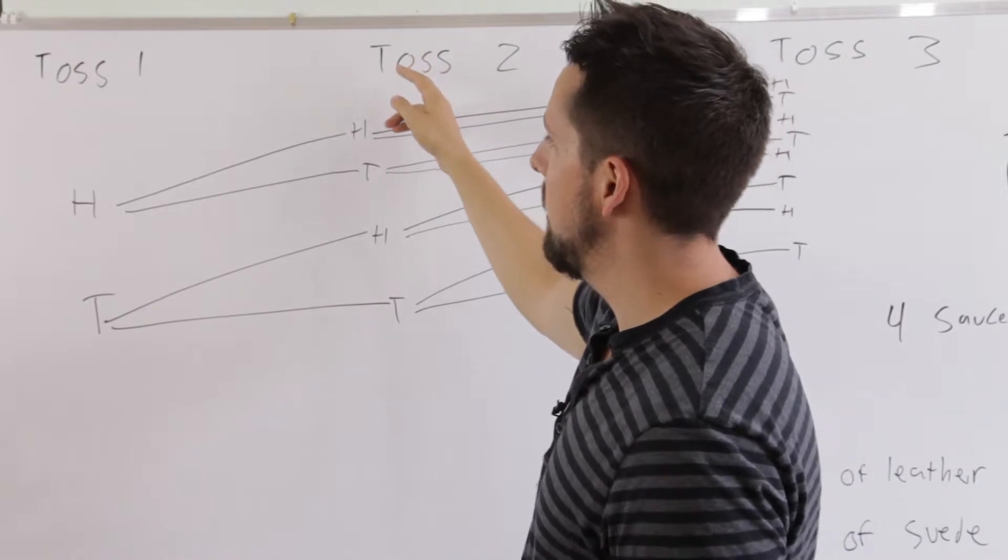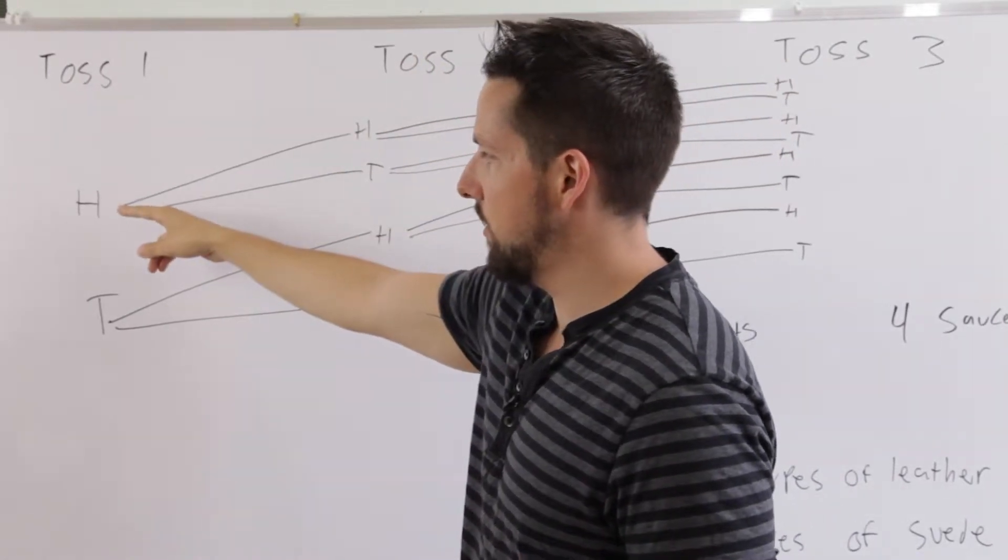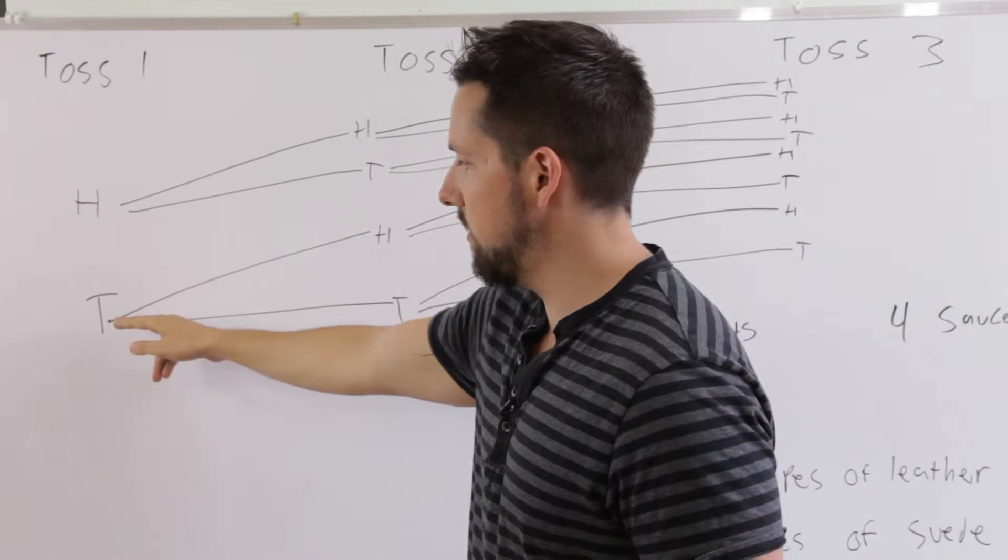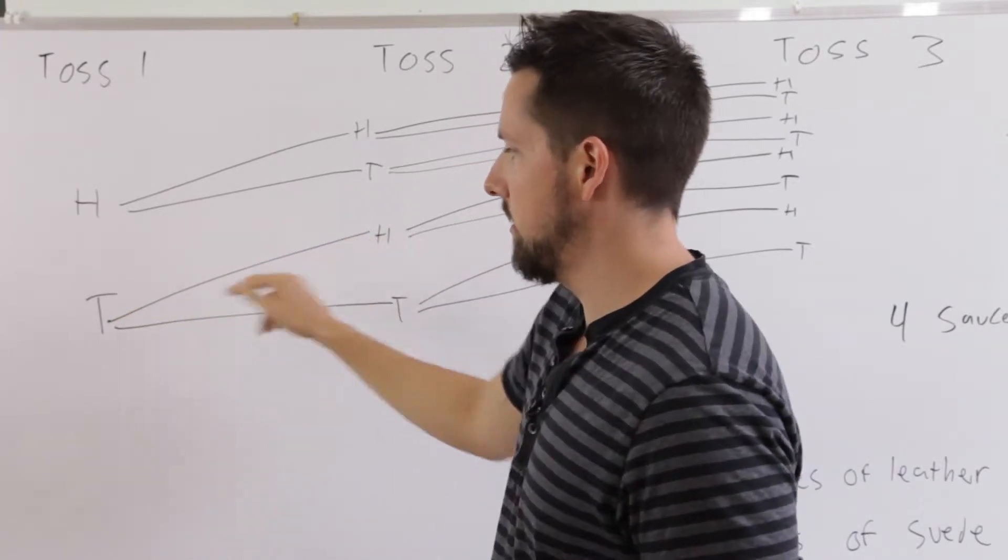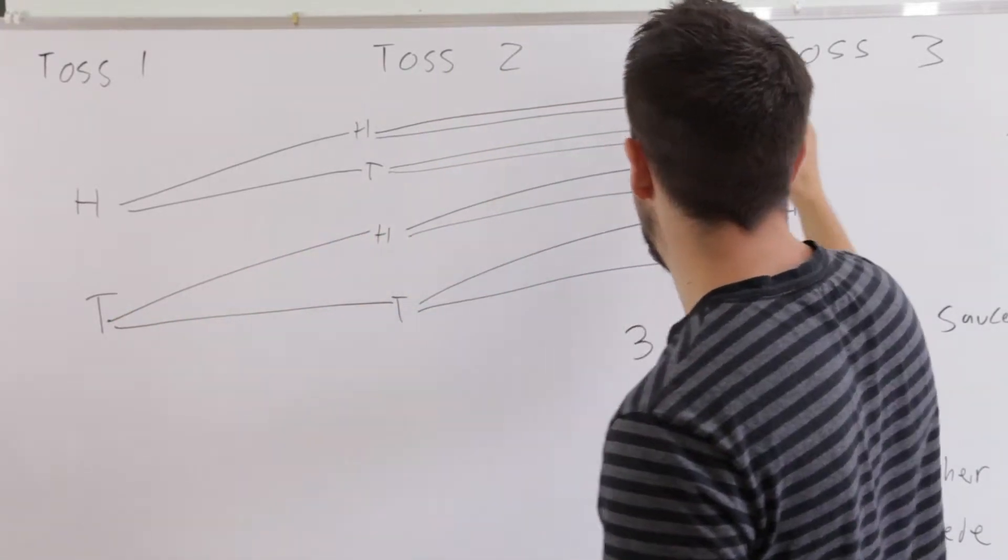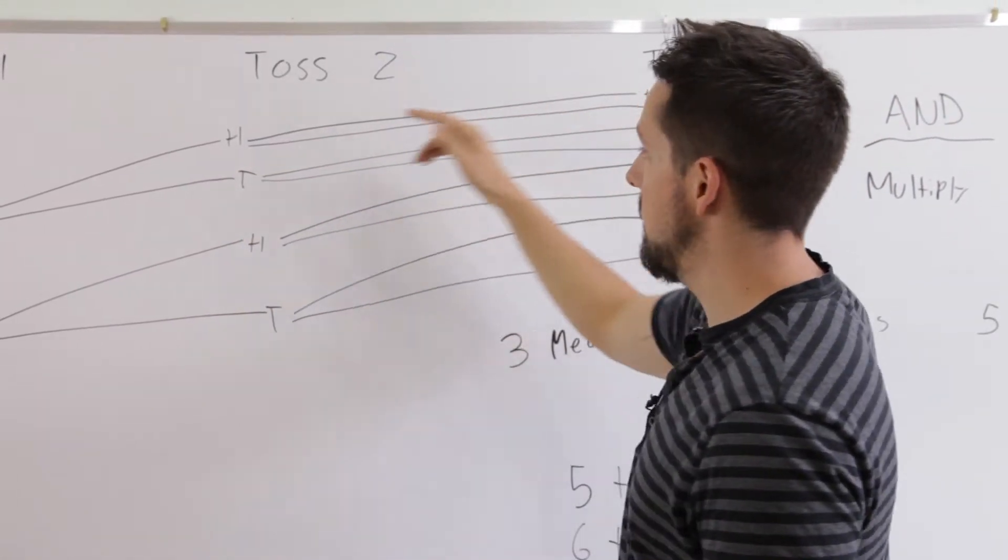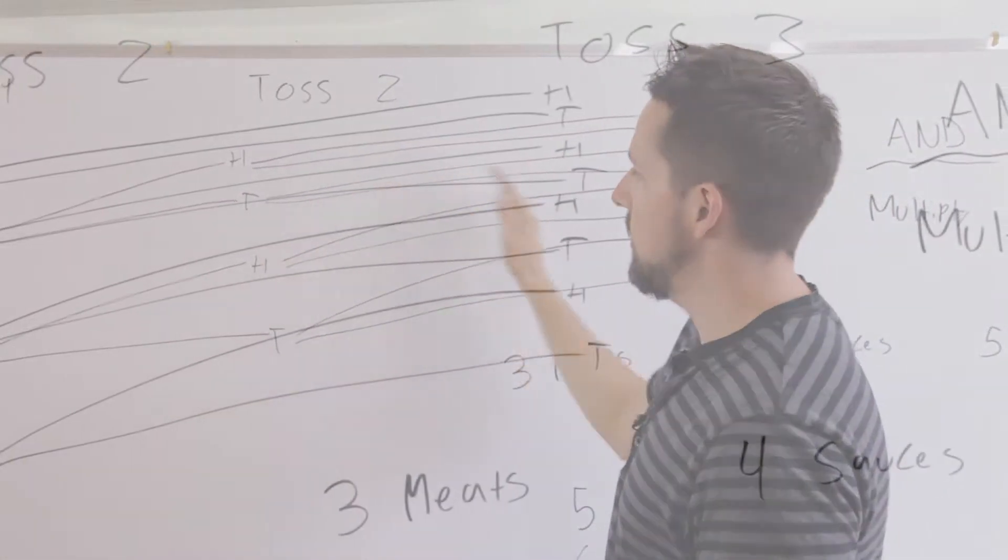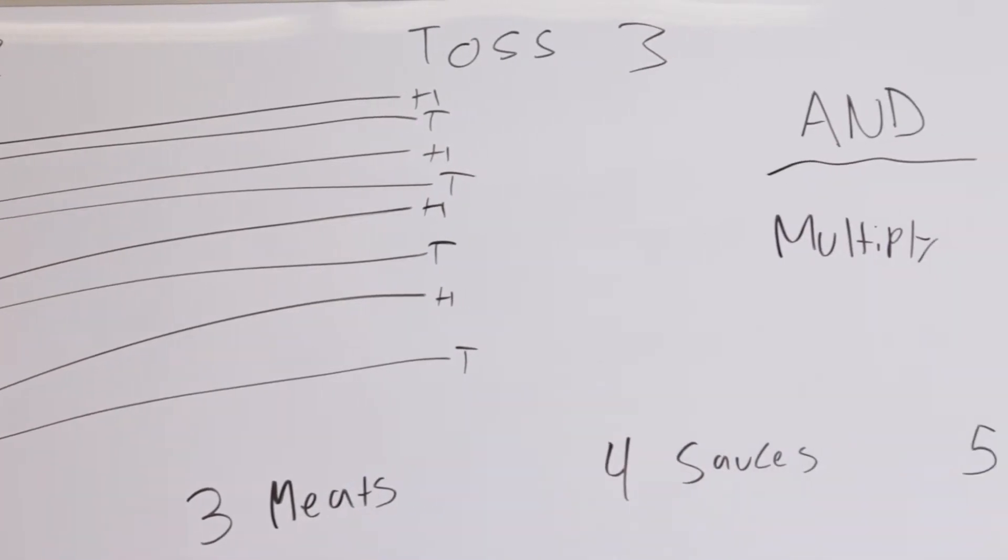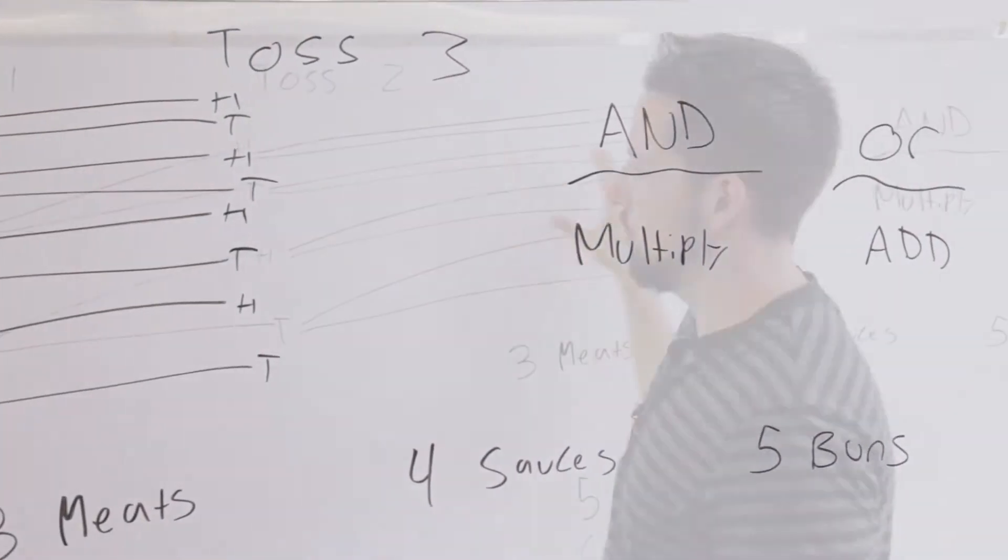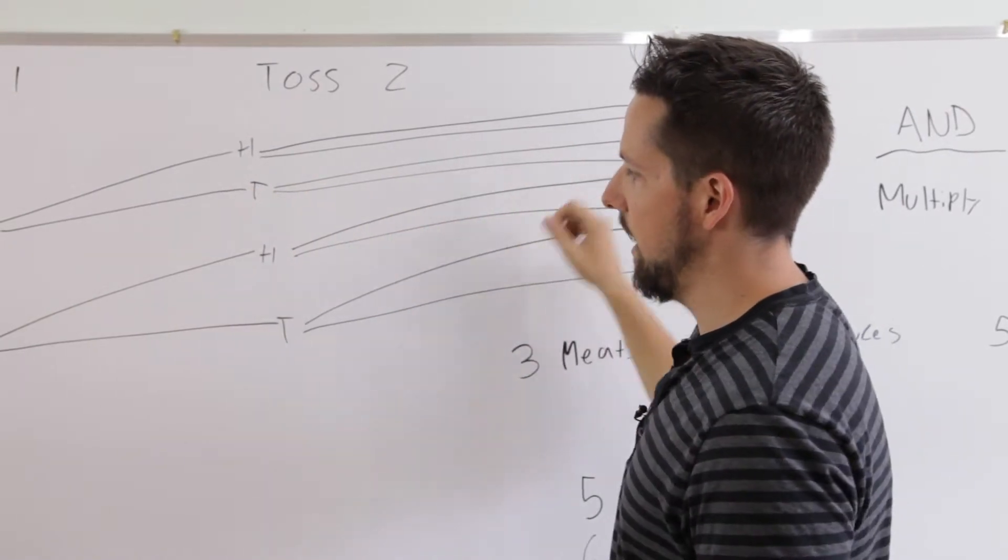The next toss, you can either get a heads on the first one and then another heads or tails, or a tails on the first one and then another heads or tails. And it continues like this. For the third toss, you can have heads, heads, and then another two. So we keep doing this tree diagram and then we notice at the end that we have eight outcomes. It doesn't really look like a tree, but this is how you do the tree diagram.